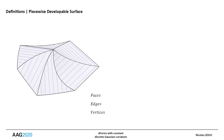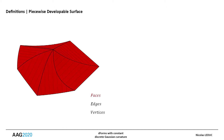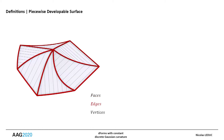For the following, we adopt, for the elements of the piecewise developable surfaces, a terminology analogous to that of polyhedral surfaces. A face is defined as a single smooth developable surface. An edge is defined as the intersection of two faces.